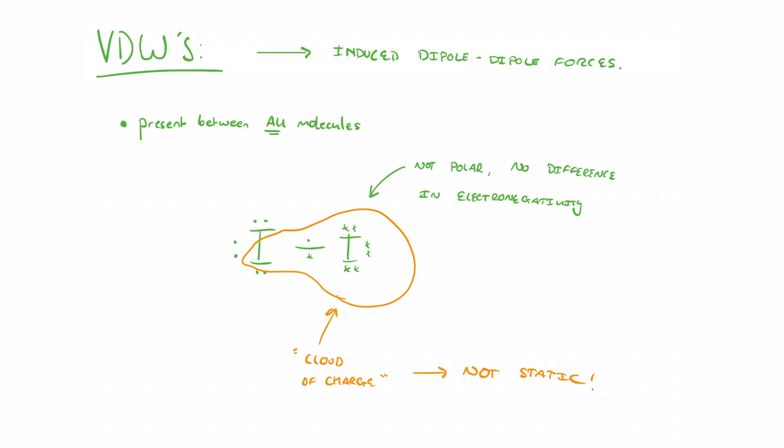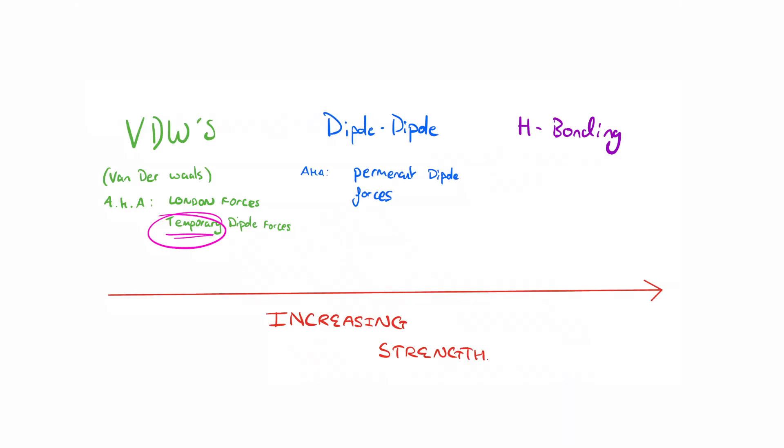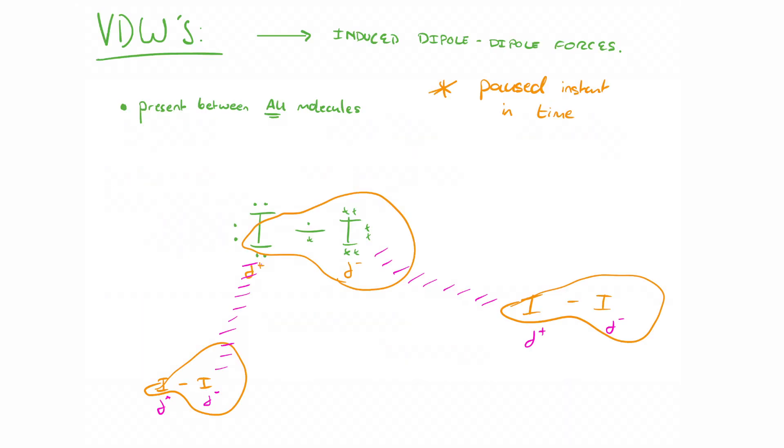At any given time, an iodine molecule might look like this, where one end's got more electrons than another. And if we think about what we just talked about in terms of electrical charge on a polar molecule, similar things happen here, just to a lesser extent. One end, again, is going to be slightly negative and one's going to be slightly positive. So we get a temporary dipole. This is what holds a big group of iodine molecules together.